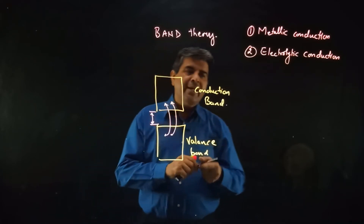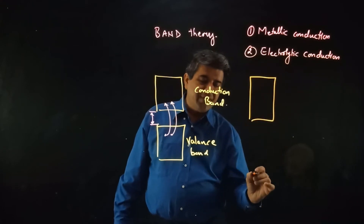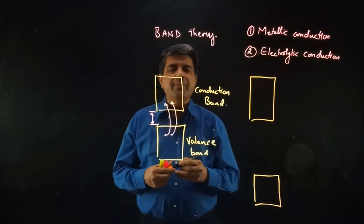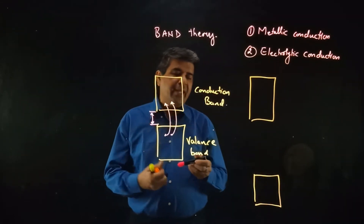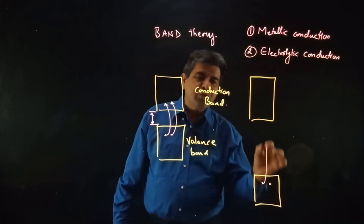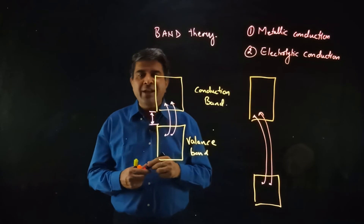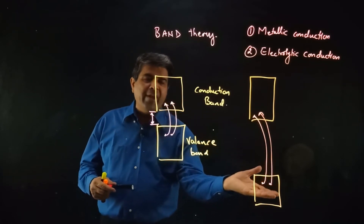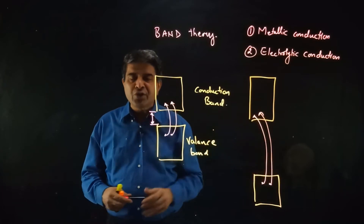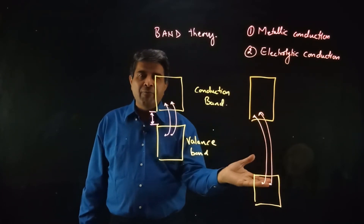In another case, if the conduction band and valence band have a higher energy difference, the electrons residing in the valence band have to absorb extra energy to jump to the conduction band. This electronic transition is not easy, so the metal would not behave as a very good conductor.